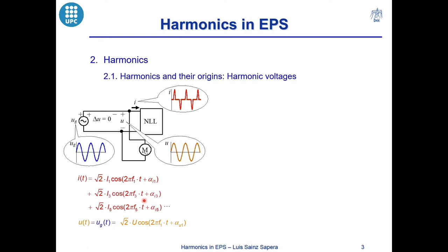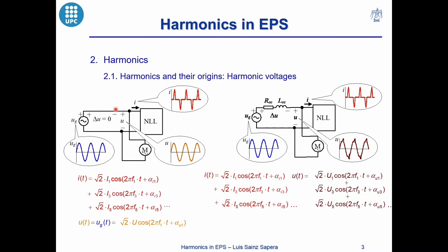In conclusion, even if there are nonlinear loads in the circuit, there will be no harmonic voltages when the grid has no impedance. On the other hand, the voltages become distorted and contain harmonics when there are nonlinear loads injecting harmonic currents through the impedances of the grid. We can conclude that the origin of harmonic voltages is the presence of harmonic currents injected by nonlinear loads and the impedance of the grid.